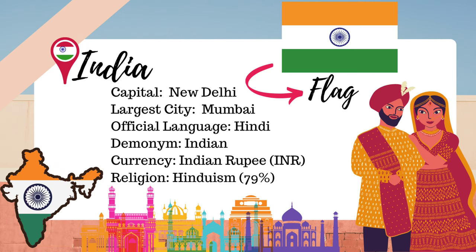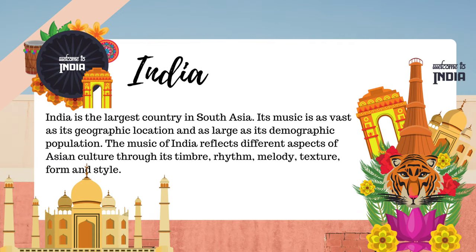Let's go to India. Capital: New Delhi. Largest city: Mumbai. Official language: Hindi. Currency: Indian rupee (INR). Religion: Hinduism, 79%. India is the largest country in South Asia. Its music is as vast as its geographic location and as large as its demographic population.